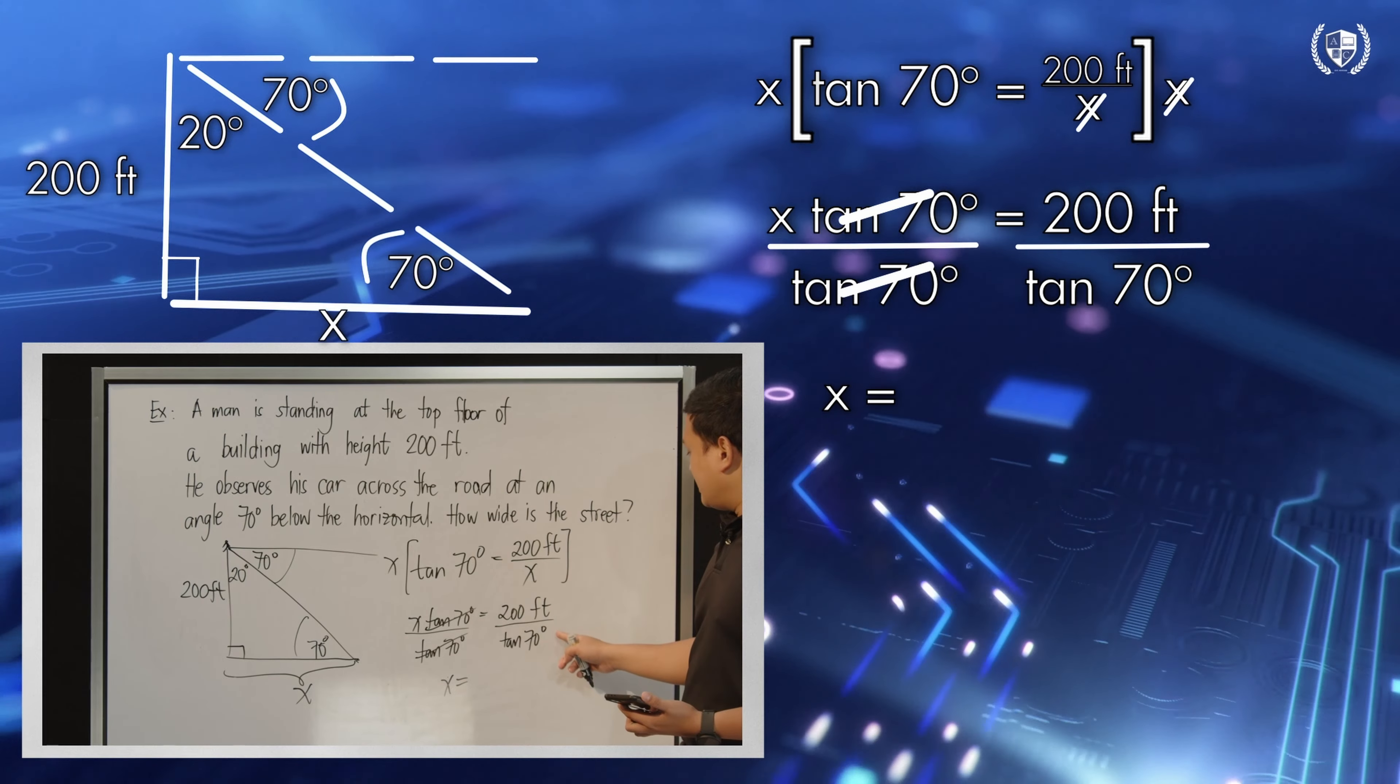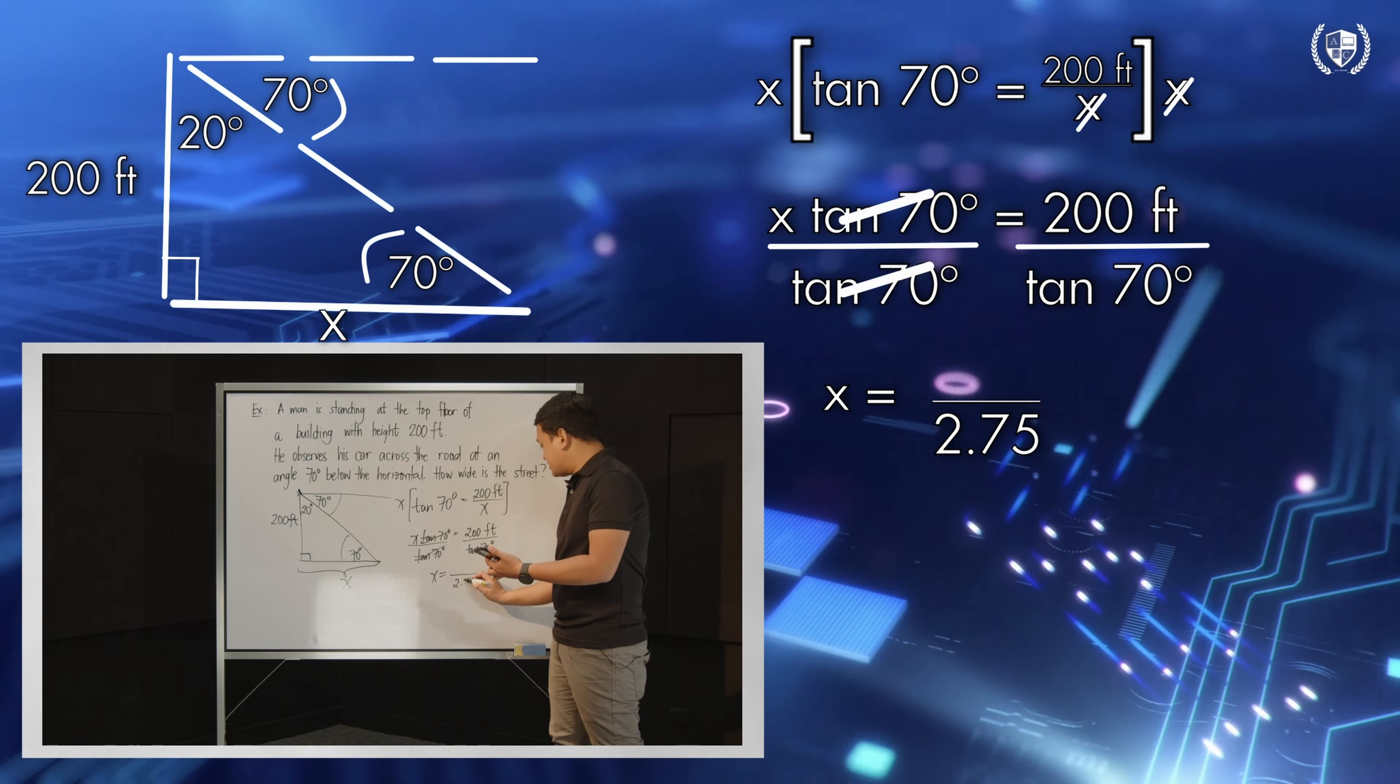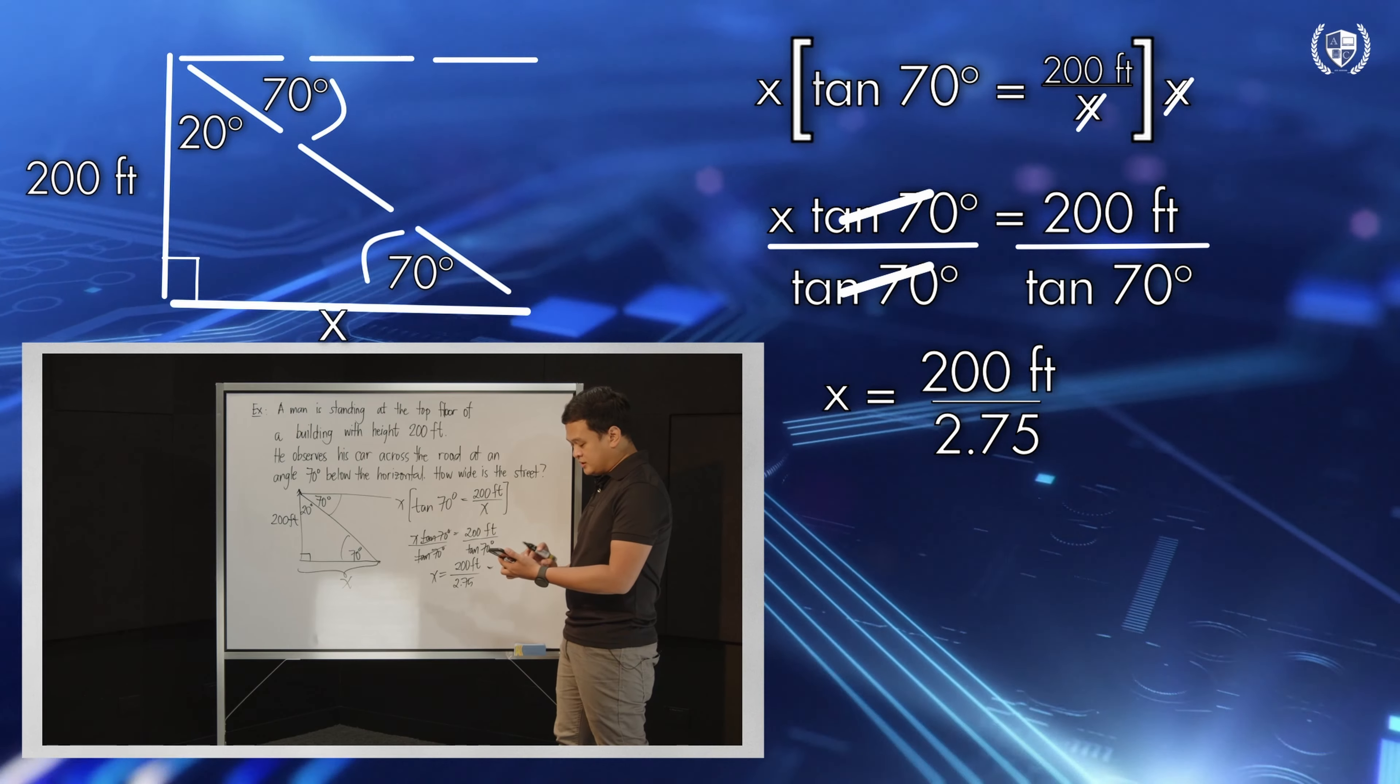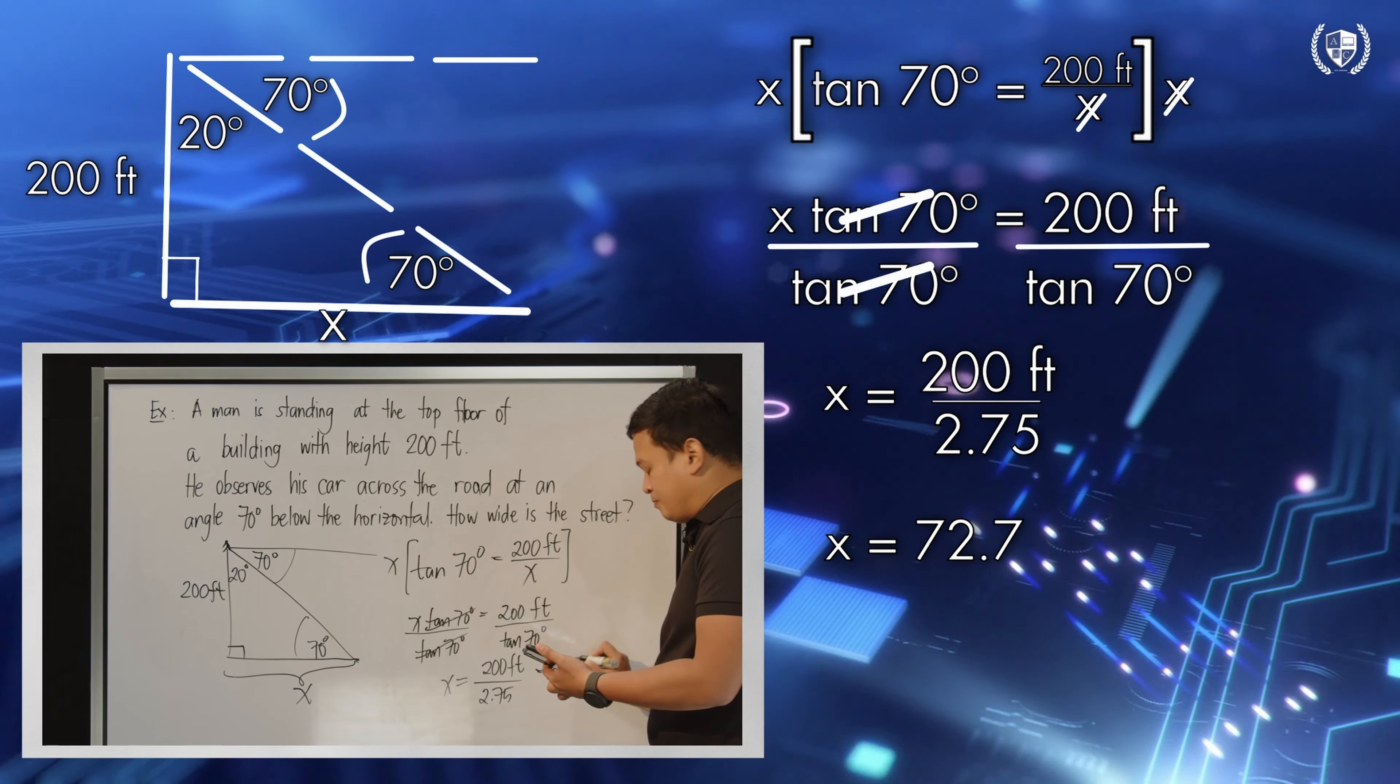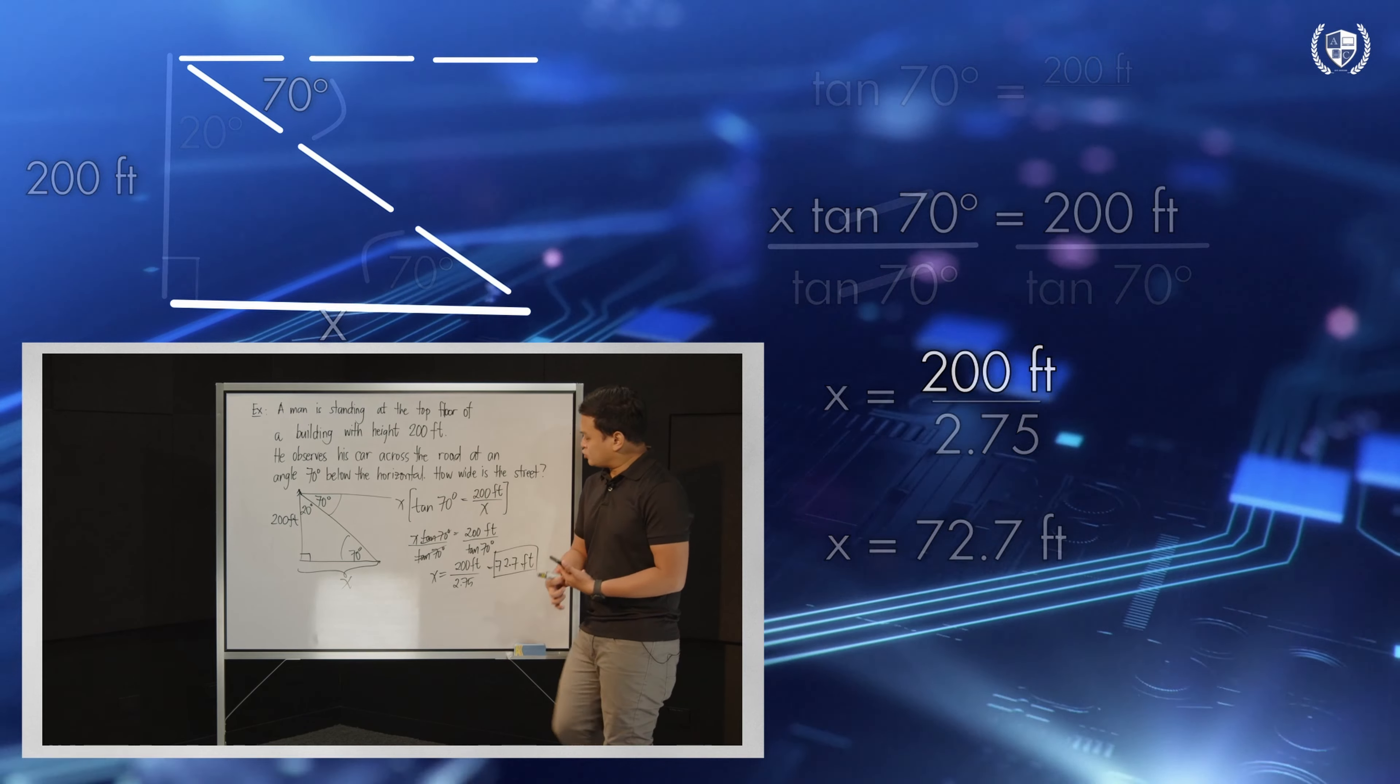Let's solve for tangent 70. Tangent 70 degrees is approximately 2.75. So, you have 200 feet here. And then, let's just divide this. So, 200 divided by 2.75 gives us 72.7 feet. This is the width of our road. So, that's the measurement of this x.